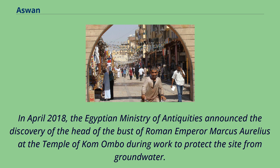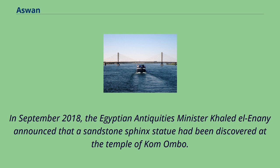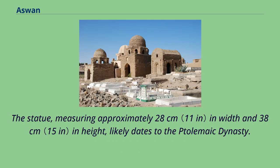In April 2018, the Egyptian Ministry of Antiquities announced the discovery of the head of a bust of Roman Emperor Marcus Aurelius at the Temple of Kom Ombo during work to protect the site from groundwater. In September 2018, Antiquities Minister Khaled el-Enany announced that a sandstone sphinx statue had been discovered at the Temple of Kom Ombo, measuring approximately 28 cm in width and 38 cm in height, and likely dating to the Ptolemaic dynasty.